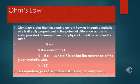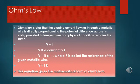Ohm's Law. In 1827, a German physicist, George Simon Ohm, formulated a relationship between the electric current flowing through a metallic wire and the potential difference or voltage applied across its ends.